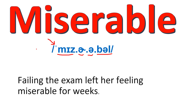Miserable. It's a four-syllable word. As you can see on screen, I have underlined each syllable, and the stress is on the first syllable, shown by the arrow. So the pronunciation is 'miserable' — you will stress the first syllable: mis. Miserable. Example sentence: Failing the exam left her feeling miserable for weeks.